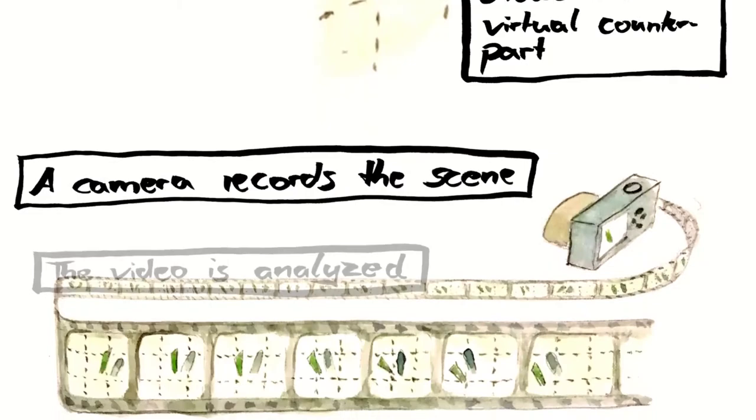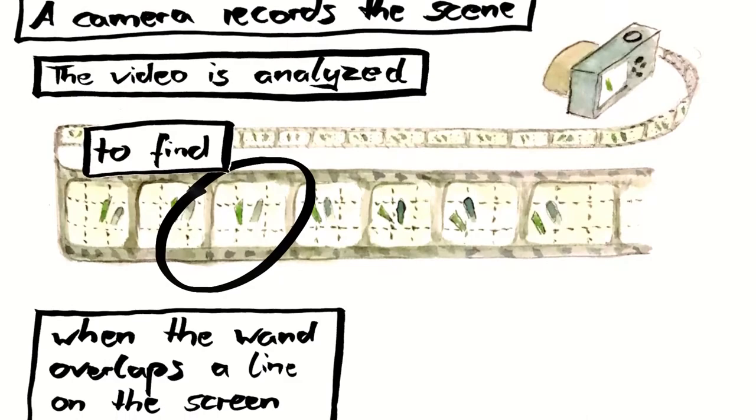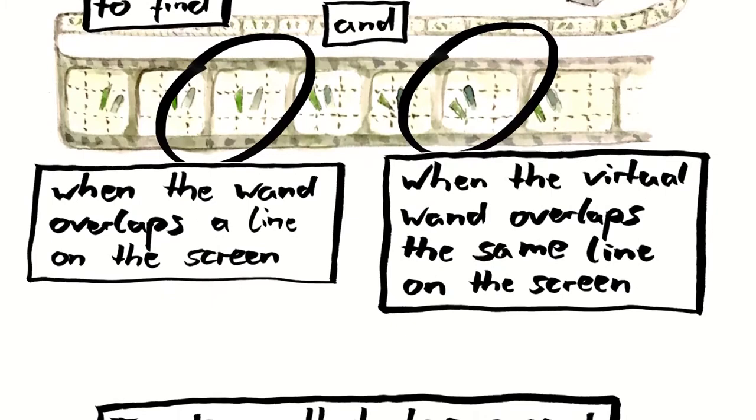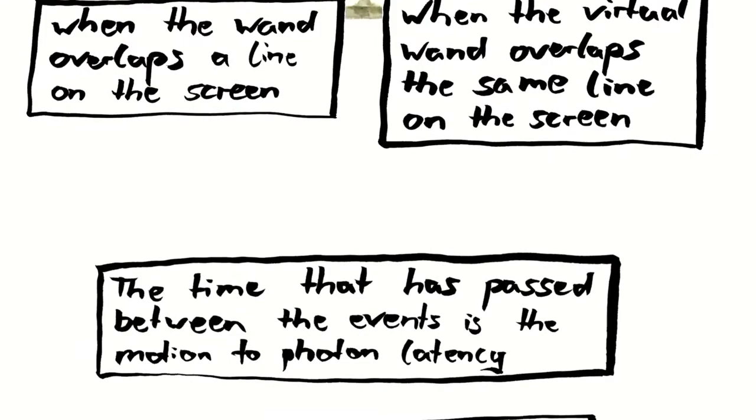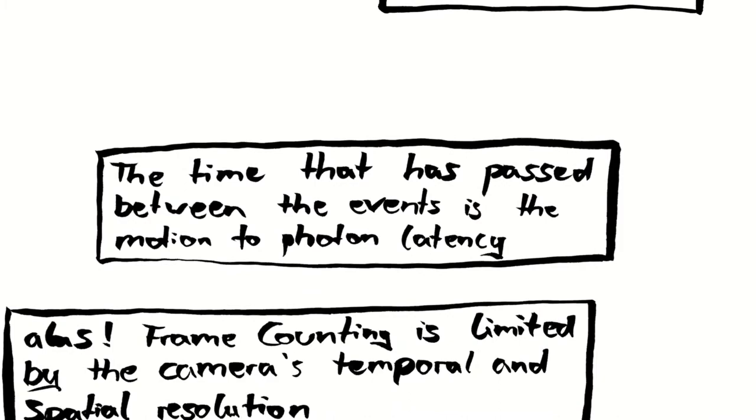The video is analyzed to find when the wand overlaps a line on the screen and when the virtual wand overlaps the same line on the screen. The time that has passed between the events is the motion to photon latency. Alas, frame counting is limited by the camera's temporal and spatial resolution.